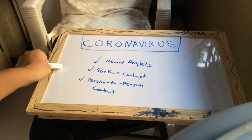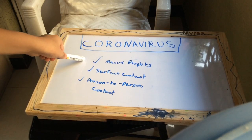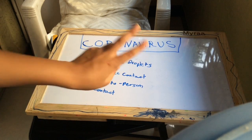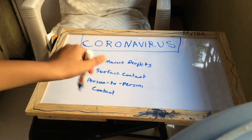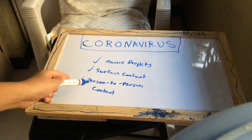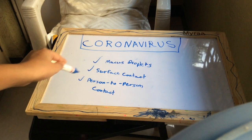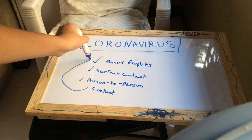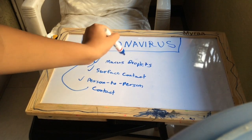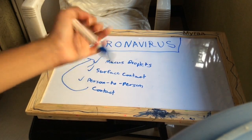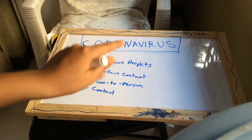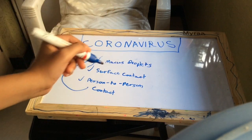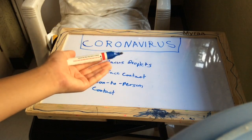Not only does the virus spread through mucus droplets, it also spreads through surface contact. It mostly survives on surfaces for either one second or up to 48 hours — that's equal to two days. The next way is person-to-person contact. When a person sneezes, mucus droplets land on surfaces. When you touch your eyes, nose, and mouth — basically your T-zone — all three areas lead directly to your intestines, and you know what the rest is.